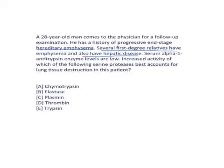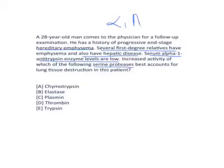The labs show serum alpha-1 antitrypsin enzyme levels are low — a significant finding indicating alpha-1 antitrypsin deficiency. Because of this deficiency, we need to determine which serine protease has increased activity that best accounts for lung destruction in this patient. This is clearly a case of alpha-1 antitrypsin deficiency.